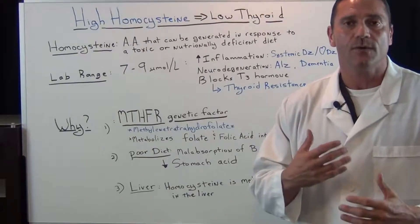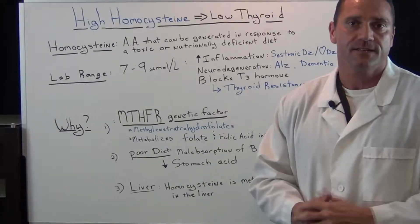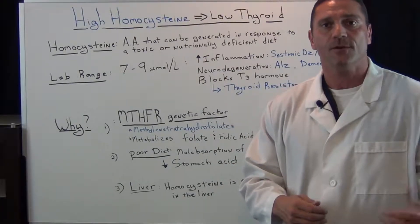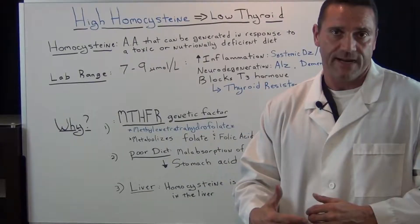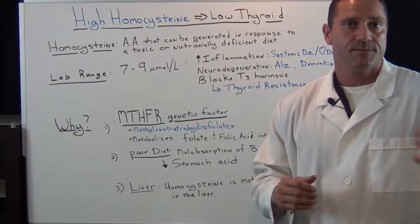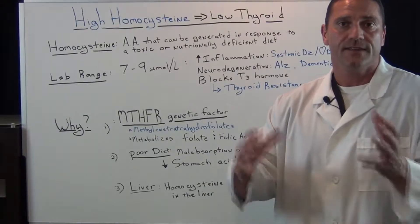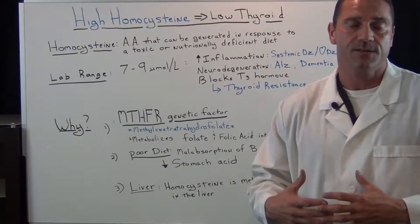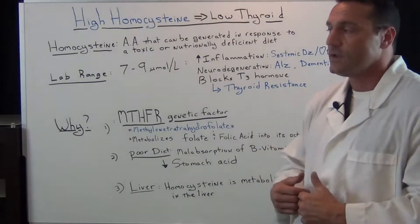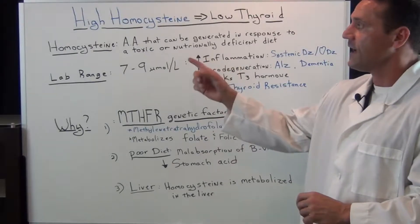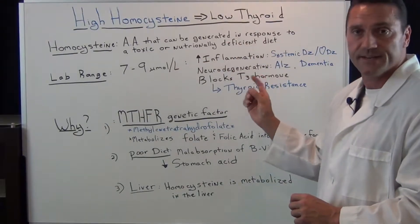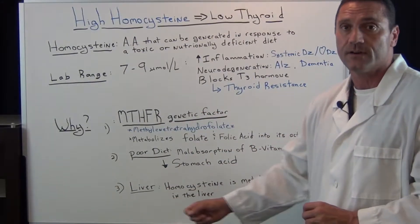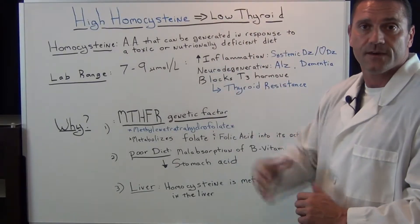Even if you don't know whether you're positive for the MTHFR gene, as a precautionary matter when you're taking vitamins, get the methylfolate and the methylcobalamin anyway. If you have a bad diet due to poor stomach acid, these are already in active form, so you will absorb the B9 and B12 into your system — and B9 and B12 are good for the nervous system. So if you have high homocysteine levels in your blood due to a bad diet, the genetic factor, or a poor functioning liver, this is where you're getting a low functioning thyroid.